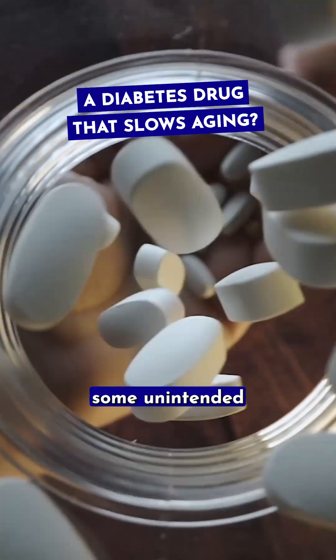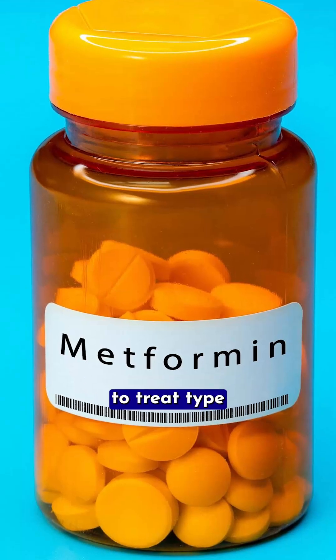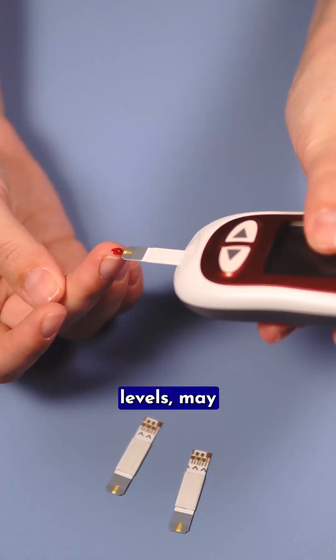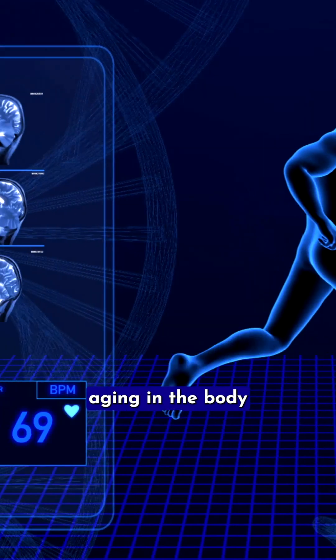Another diabetes drug might have some unintended additional benefits for your brain. Metformin, a safe and proven drug to treat type 2 diabetes by lowering blood sugar levels, may potentially slow aging in the body and brain.